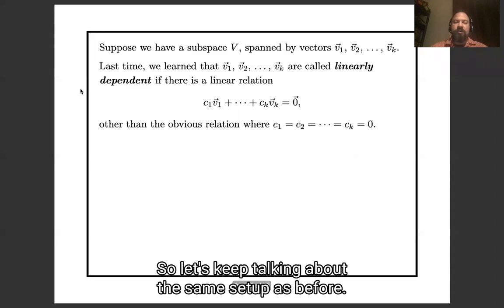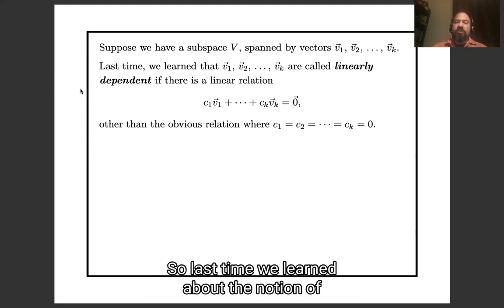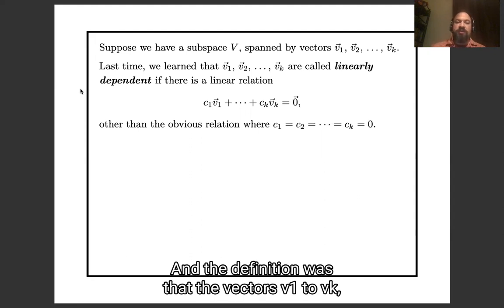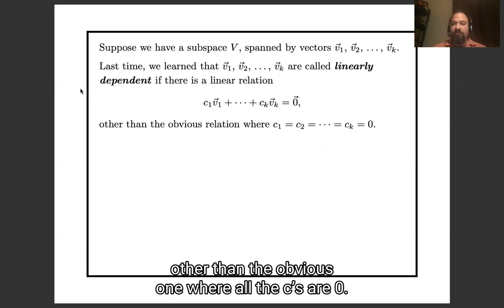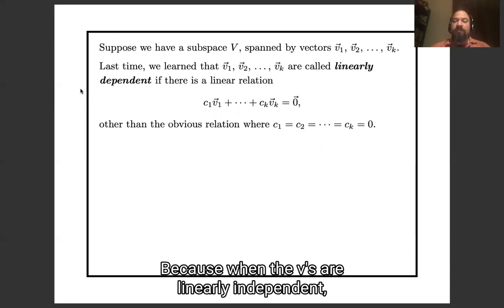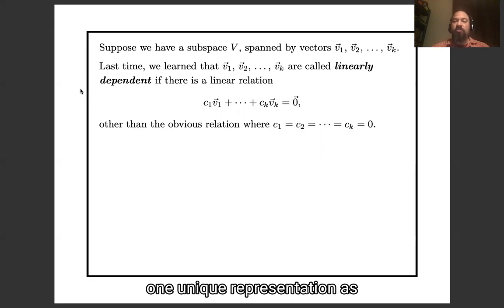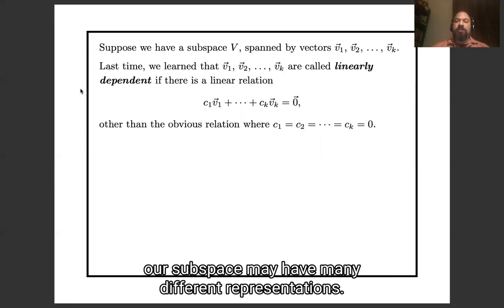Welcome back. We have a bunch of vectors v1, v2, ..., vk that span a subspace of Rⁿ. Last time we learned about linear dependence and independence: a list of vectors v1 through vk is called linearly dependent if there is a non-trivial linear relationship between them. Having the v's be linearly independent is usually better because then each element of the subspace has one unique representation as a linear combination of the v's, whereas if they are linearly dependent, the same element may have many different representations.